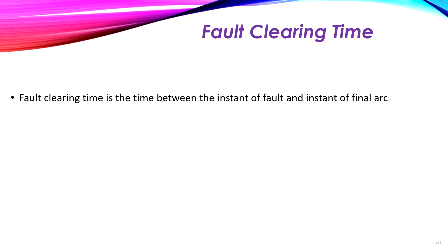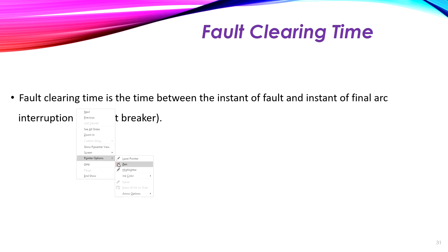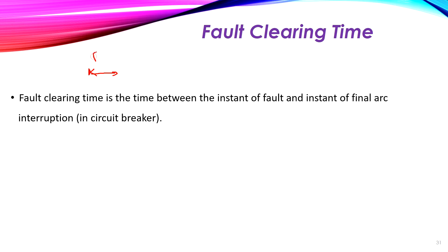The fault clearing time is the time between the instant of fault occurrence and the instant of final arc extinction or final arc interruption inside the circuit breaker. So the fault clearing time is the time of clearing the fault. At the first instant we have the fault occurrence, then after a certain amount of time — the relay time — which is the time taken by the relay to operate. For example, if it is a mechanical relay, the time it takes to close its contacts.